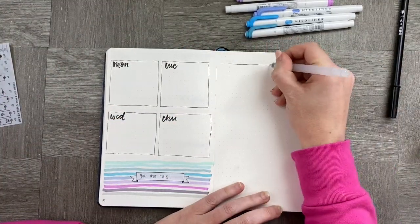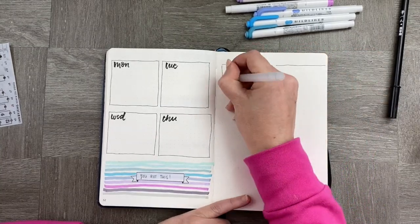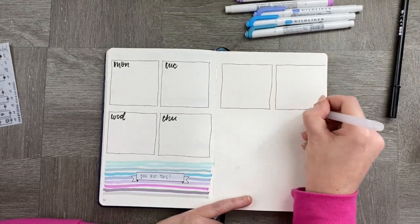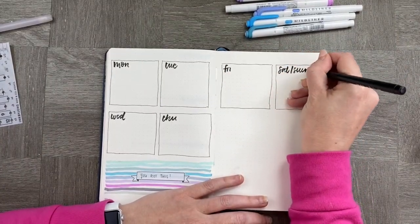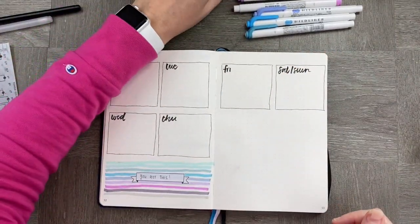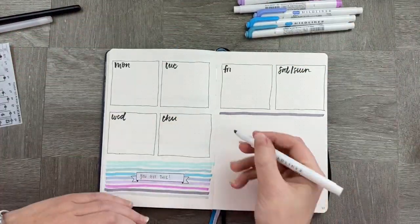I'm just using hand lettering to put in the days of the week and adding in Thursday, Friday, Saturday, and Sunday in the last bit. I'm going to add another little rainbow underneath those boxes just to balance it out.